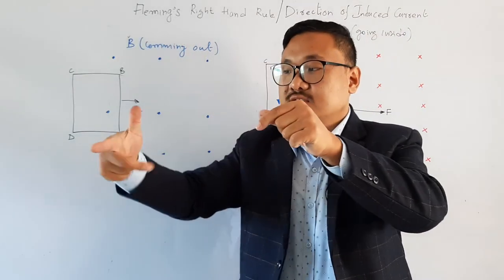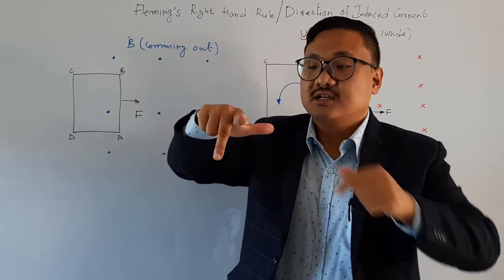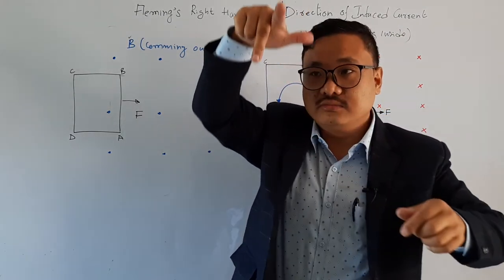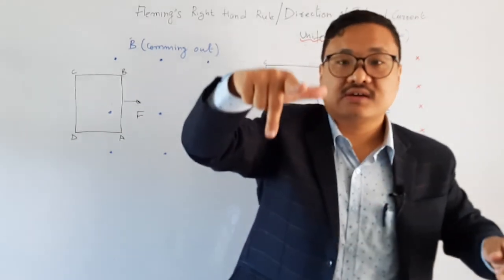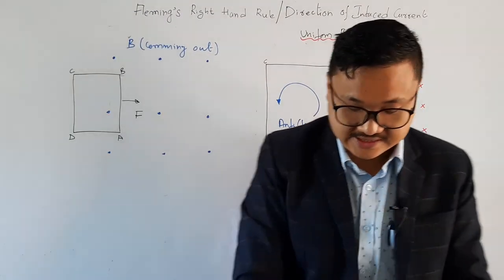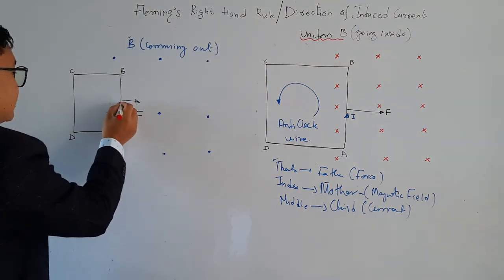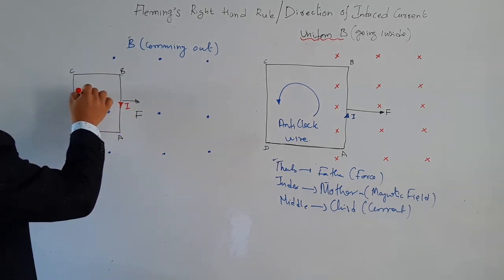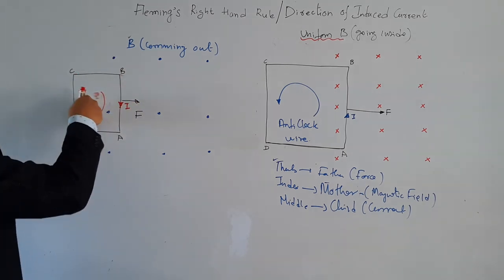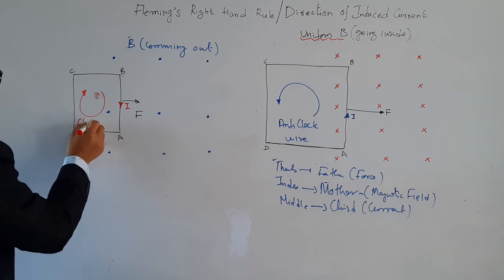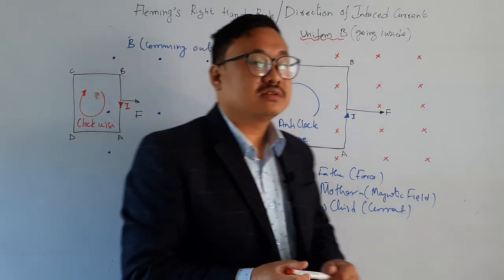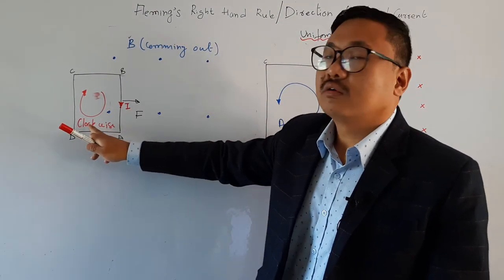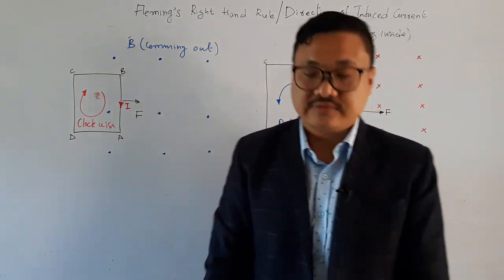Father is the force towards this direction, mother is the magnetic field coming outward, and child gives the current. With the thumb pointing in the direction of force and the index finger pointing outward for the magnetic field, the middle finger — child, meaning current — is going downward. So the induced current is going in this direction, which is clockwise. In the second case, using Fleming's Right Hand Rule, the direction of induced current in coil A B C D is clockwise.